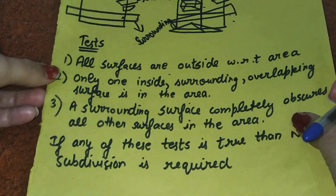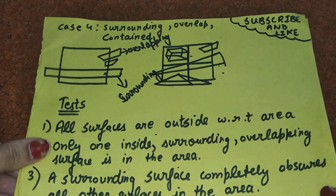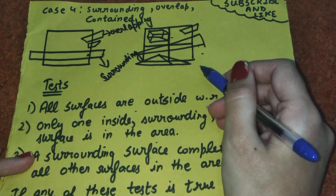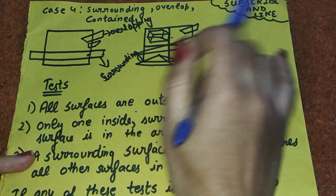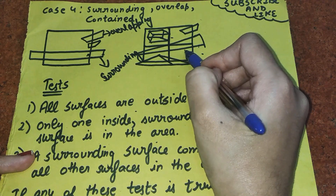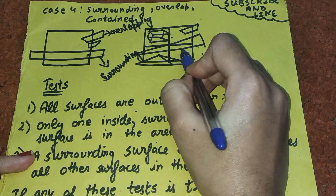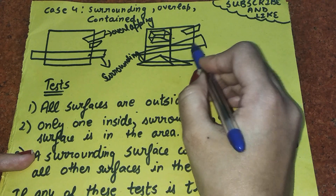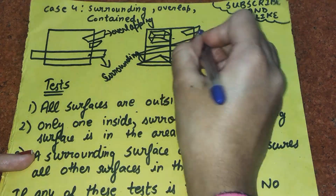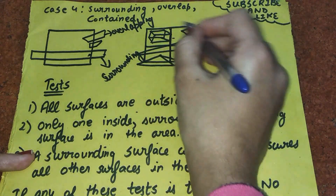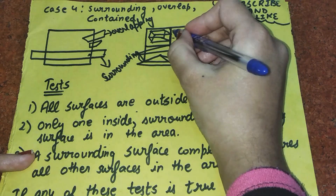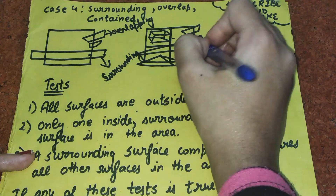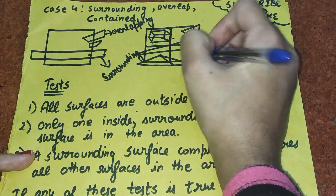The previous cases involved only one polygon linked with the area. However, further cases arise when an area is linked with multiple polygons. In this case, it is difficult to detect the visible surface, which is why we perform area subdivision. When there are more than one case linked with this area, we subdivide it in order to decrease the complexity and detect the visible surface more easily.